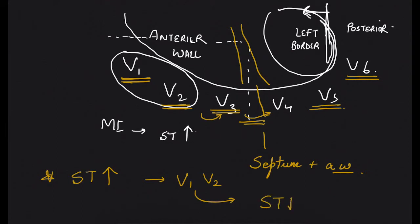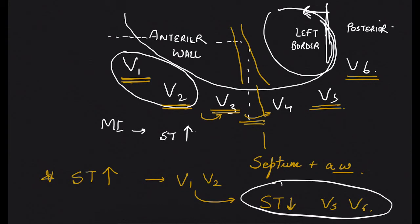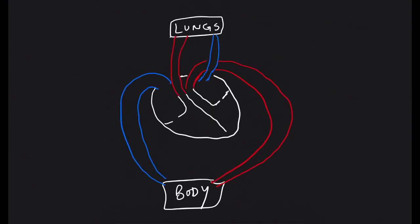One more thing to remember: if there is ST elevation in V1 and V2, there will be a corresponding ST depression in V5 and V6, based on the direction of the current — because the direction will be opposite for V5 and V6. However, this may not always be true.